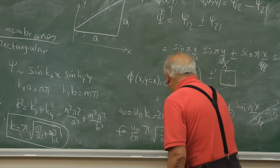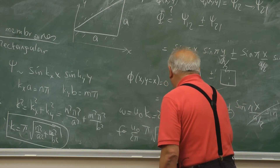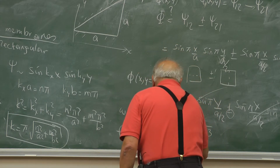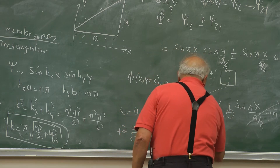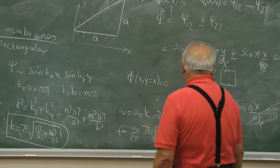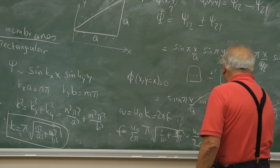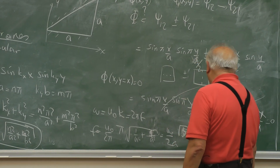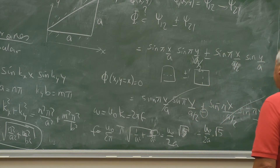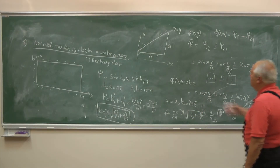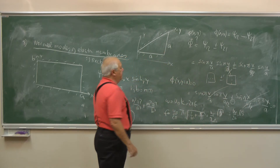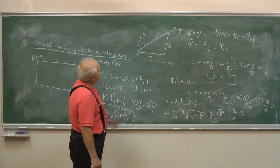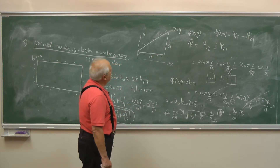So the frequency is u₀/(2a)·√5. That is the fundamental frequency of this isosceles right triangle.